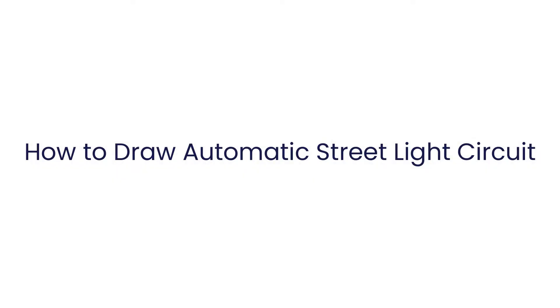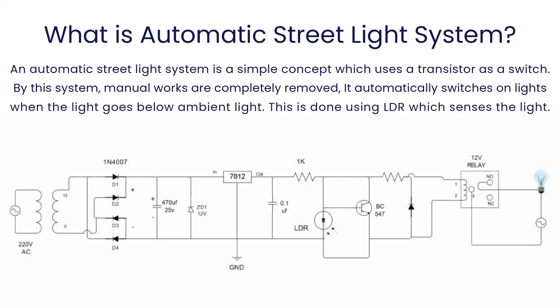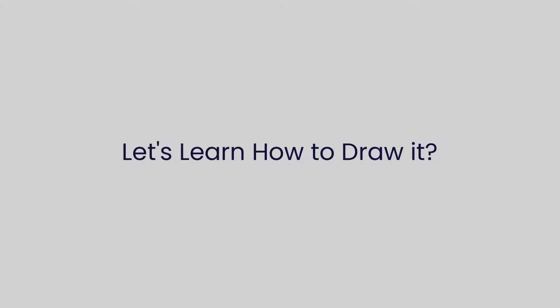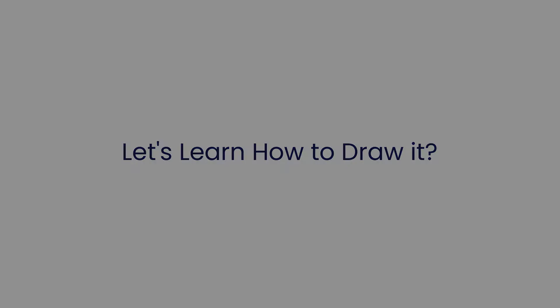An automatic street light system is a simple concept which uses a transistor as a switch. By this system, manual work is completely removed. It automatically switches on lights when the light goes below ambient light. This is done using an LDR, which senses the light. Let's learn how to draw it.